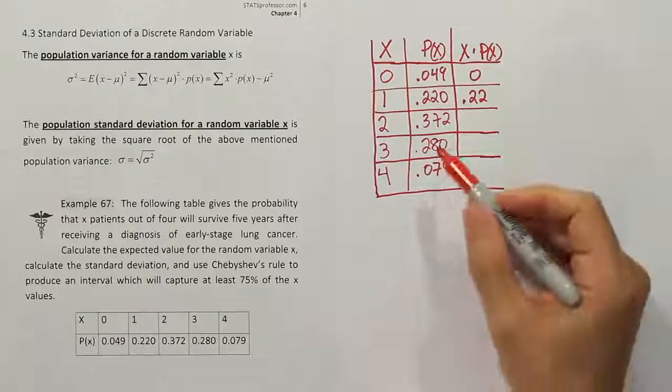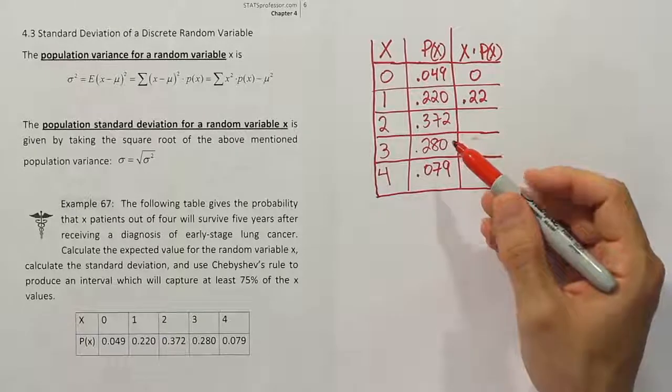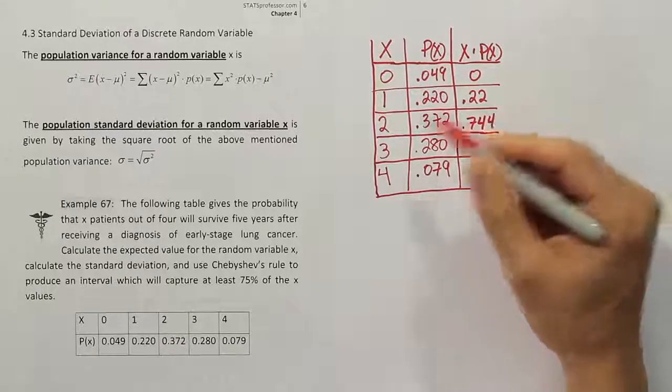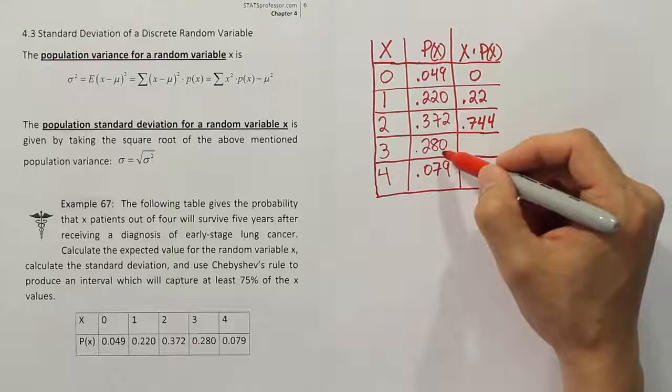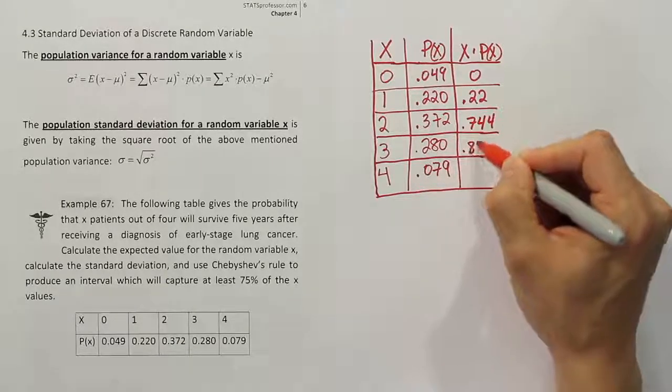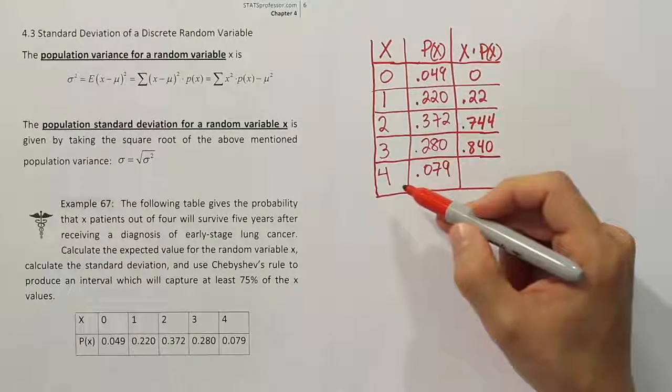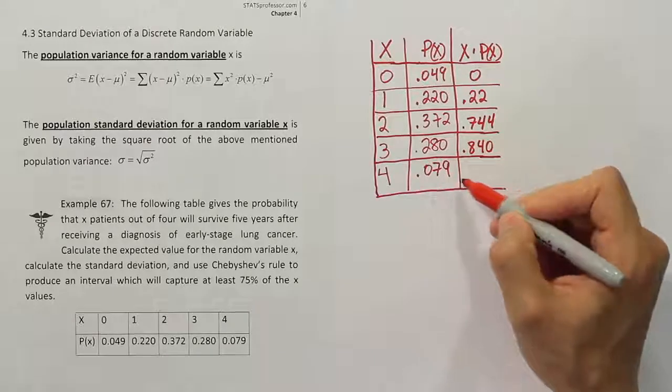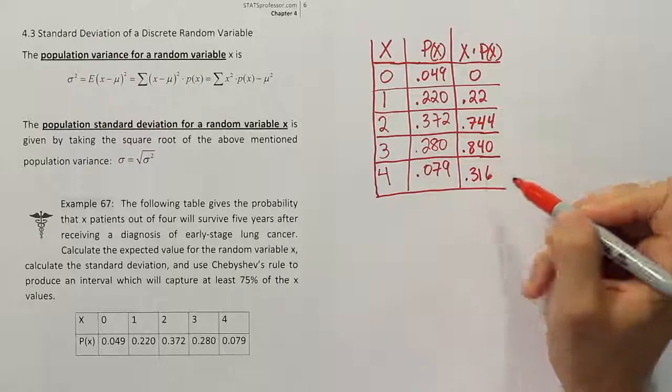If we actually do 2 times 0.372, we'll get 0.744. And if we do 3 times 0.280, we'll get 0.840. And if we do 4 times roughly 8%, we get 0.316.